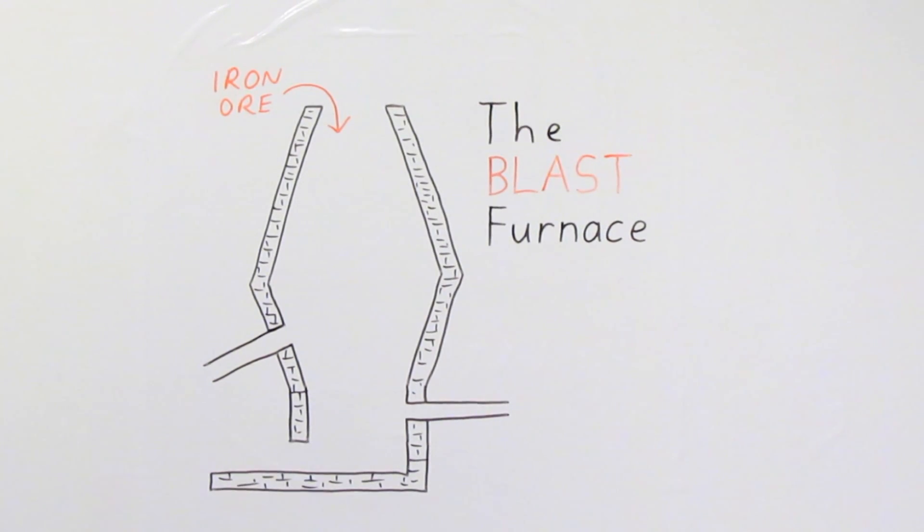Iron ore containing iron oxide and various impurities, coke which is mainly pure carbon, and limestone are all added into the top of the blast furnace. The blast furnace is heated with very hot air.